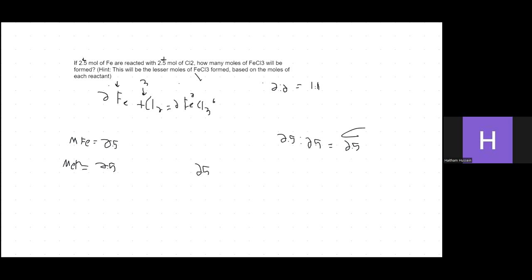I'm not sure what will be on the actual test — it might not be this simple, and there may be an excess involved. But for this specific problem from the pre-test, the answer is 2.5 moles of iron chloride. That's pretty much it.